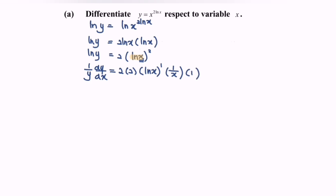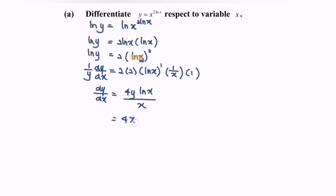Rewriting the situation, dy/dx equals 4y multiplied with ln x over x. Or you may express your final answer as 4 multiplied with x^(2 ln x) multiplied with ln x over x for dy/dx.